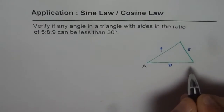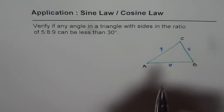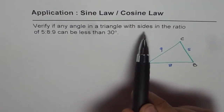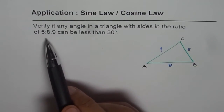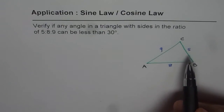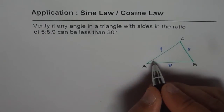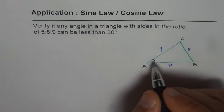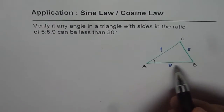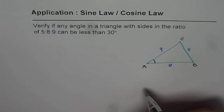Let me label the triangle as ABC. The question is: verify if any angle in a triangle with sides in the ratio of 5 is to 8 is to 9 can be less than 30 degrees. As you can see, 5 is the minimum length, so angle A will be the smallest. So if angle A is more than 30 degrees, then we can ensure that all angles are more than 30 degrees.